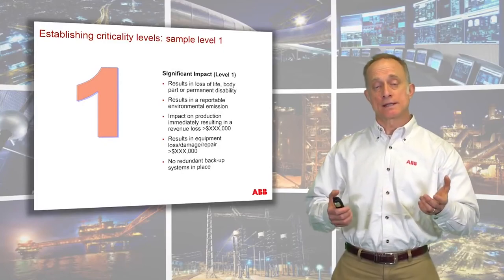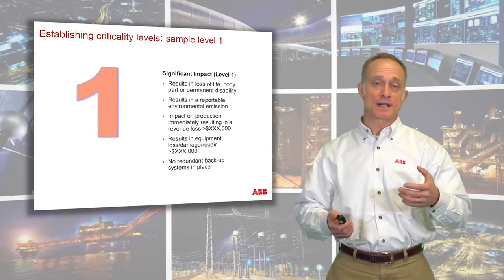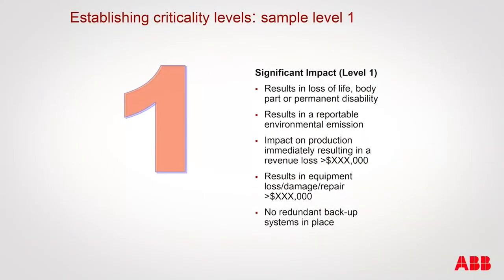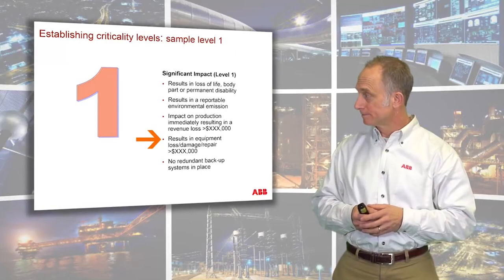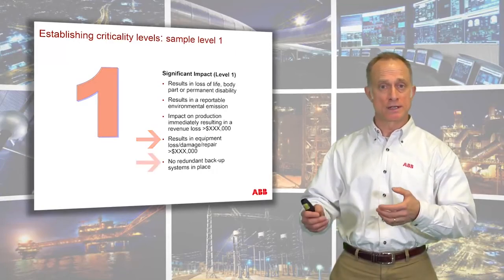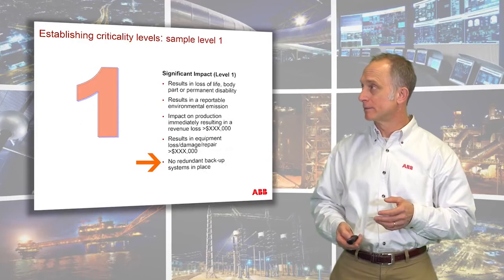Criticality levels are defined as follows. Level one: failure could result in high likelihood of loss of life, limb, or permanent disability; high likelihood of environmental emission; high likelihood of very costly production impact; costly equipment repair; and possibly no redundancy.